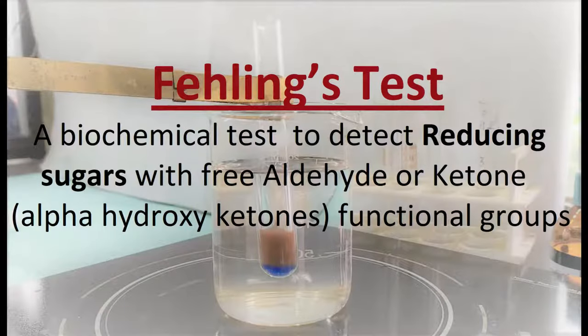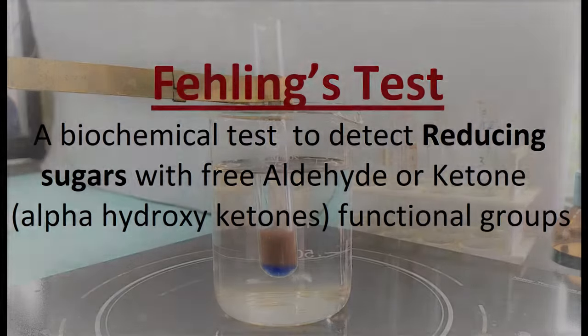Fehling's test is a biochemical test commonly employed to detect the presence of reducing sugars with free aldehyde or ketone functional groups, specifically alpha-hydroxyketones.